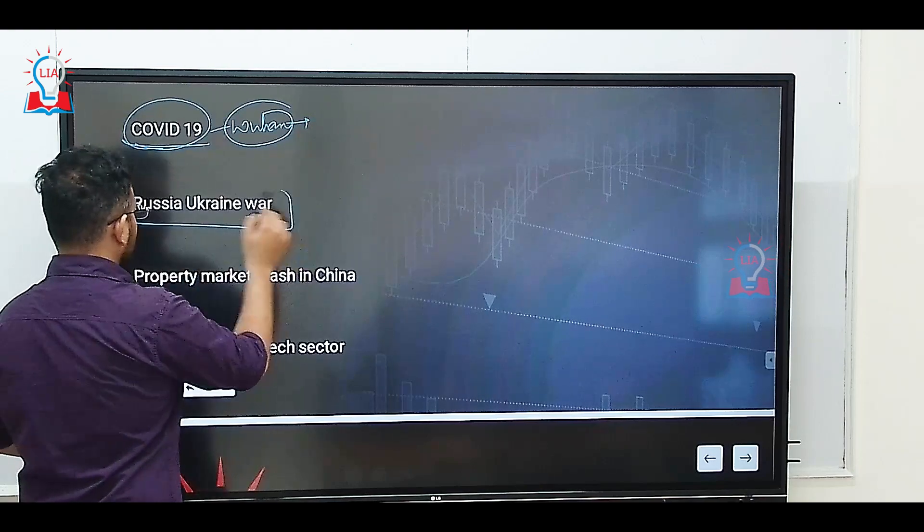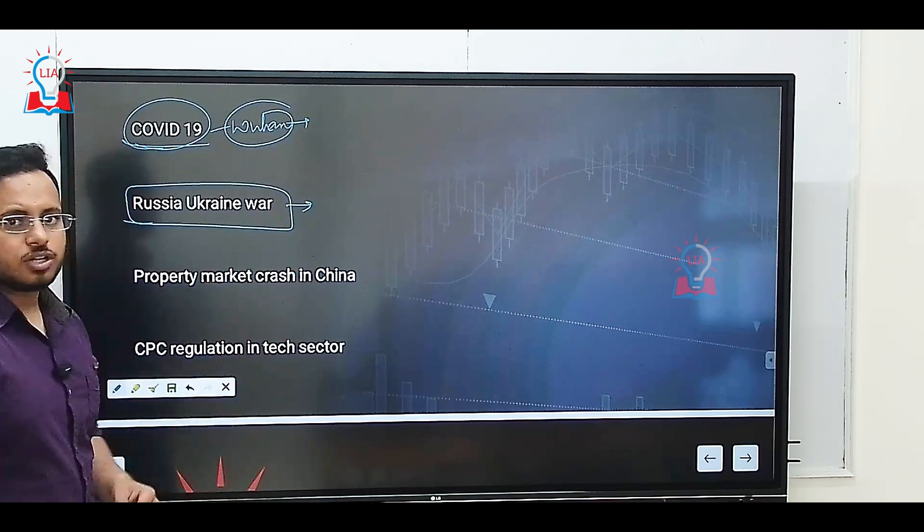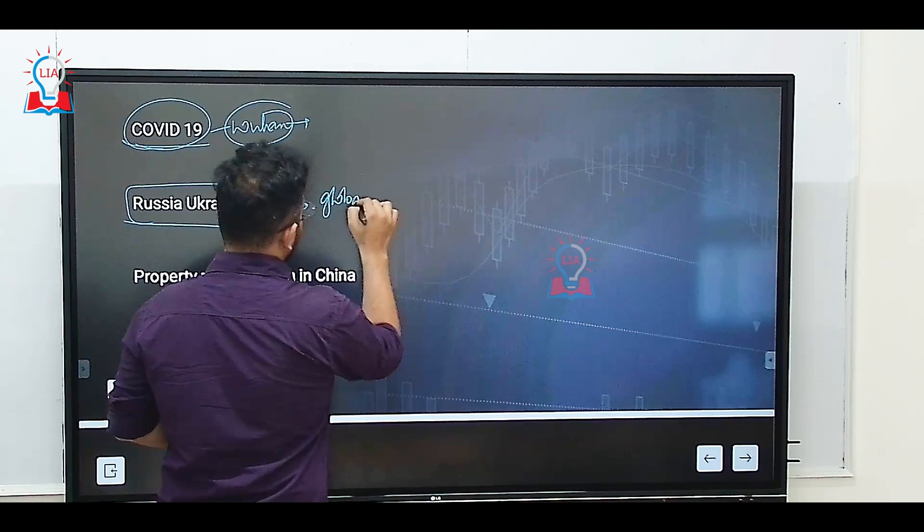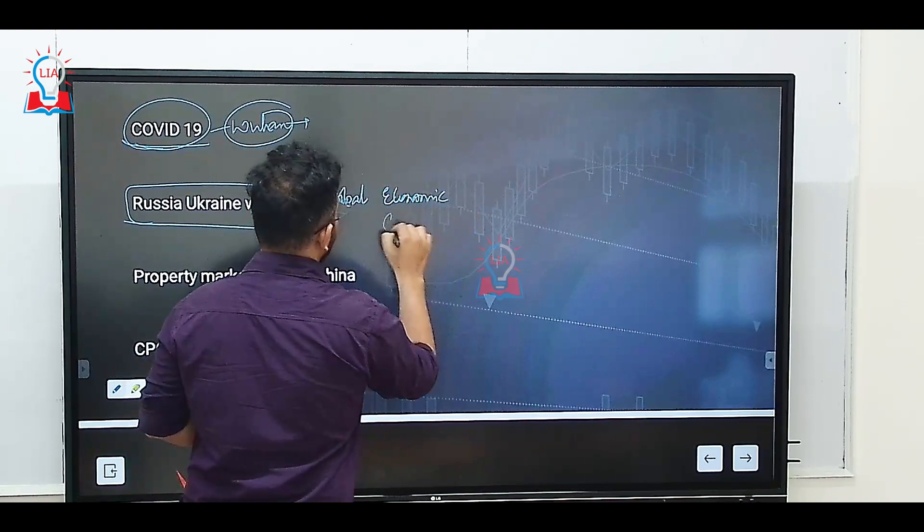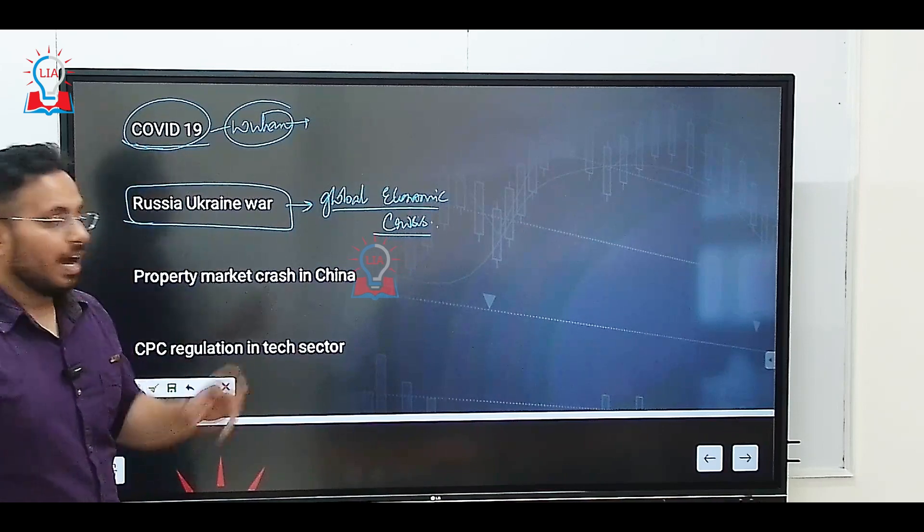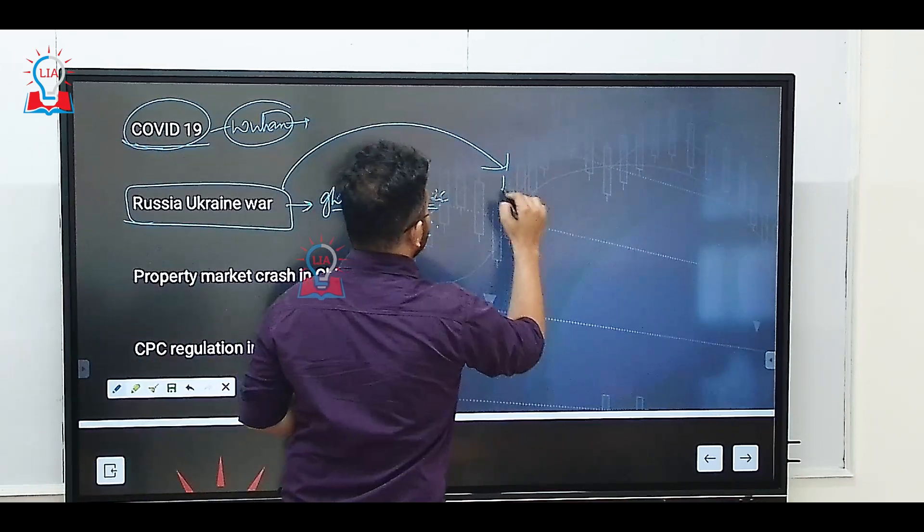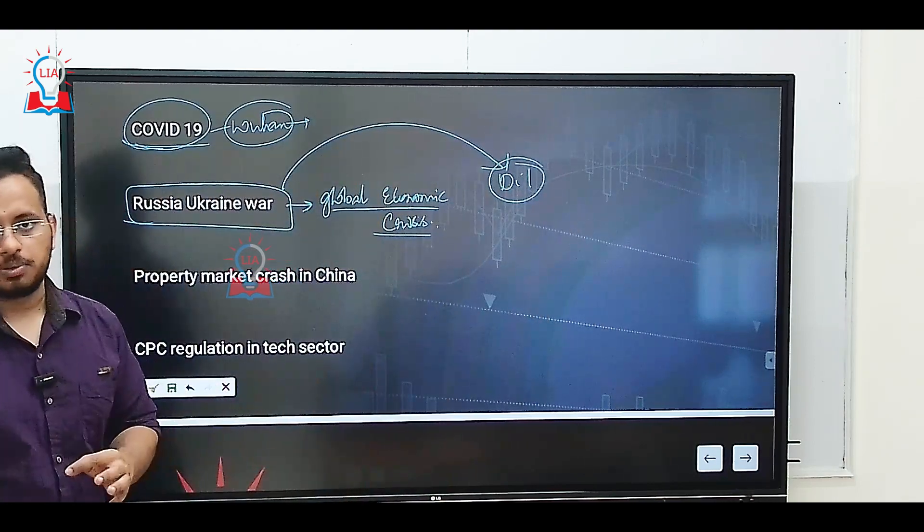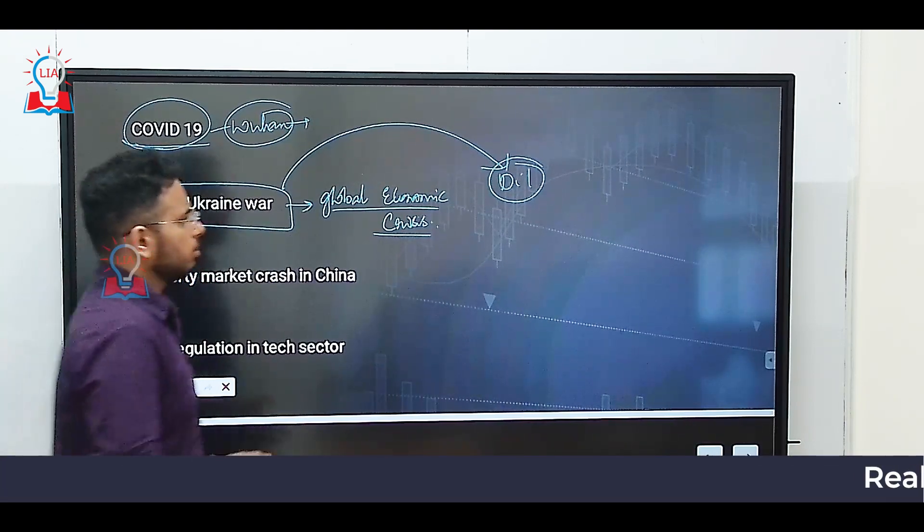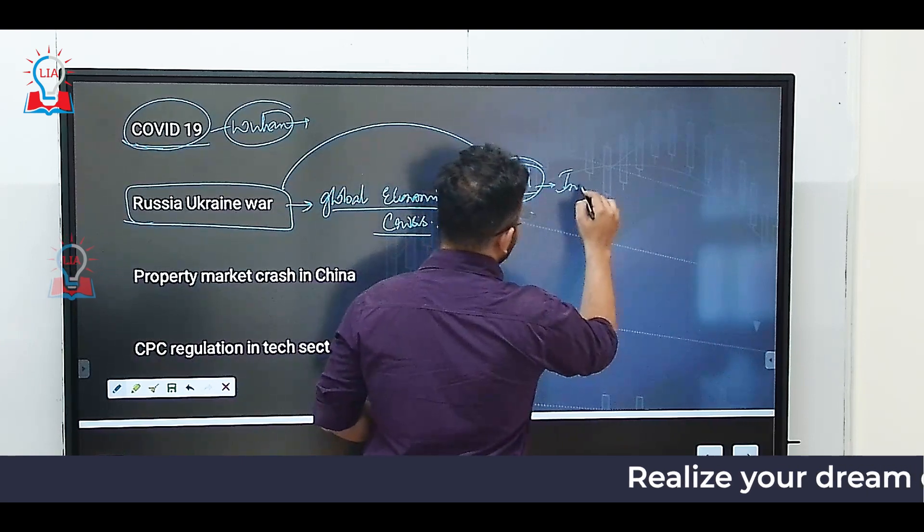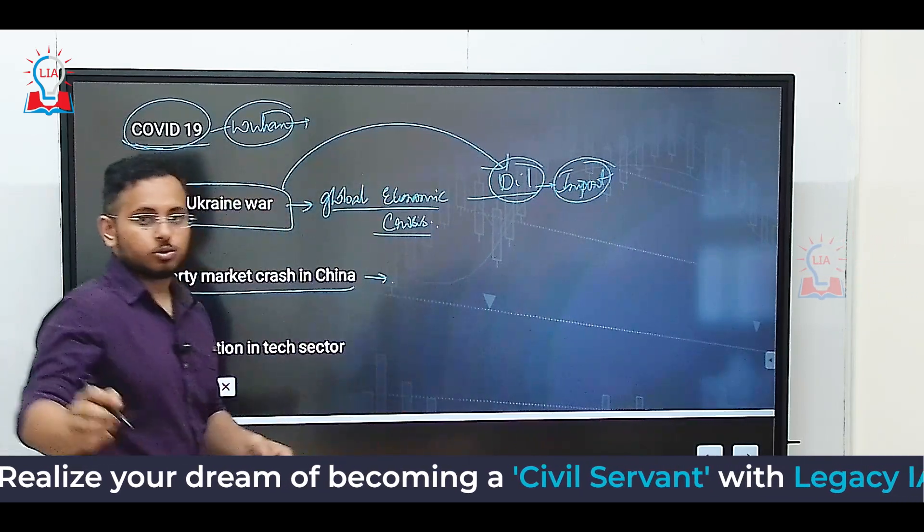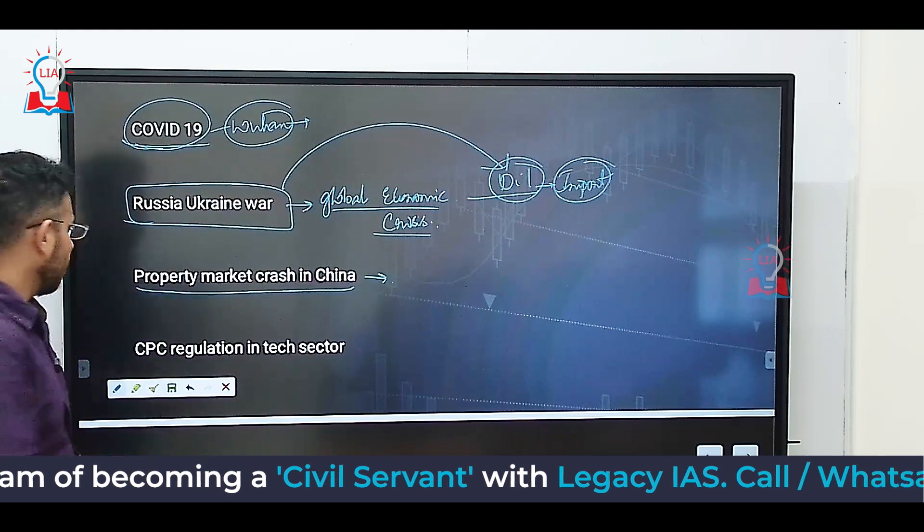Just after COVID, we have the Russia-Ukraine war. When Russia invaded Ukraine, this gave rise to a lot of global economic crisis. The oil prices went up and China is the largest importer of oil in the world. When the oil prices shot up, that is the reason why in India even we have the petrol prices at 102 rupees or 103 rupees. When the oil prices shot up, the import bill for China increased. At the same time, the Chinese housing market or the property market also crashed, real estate crashed.